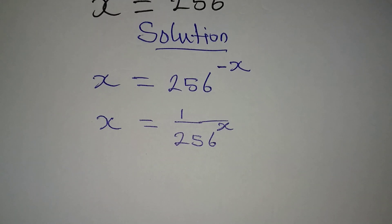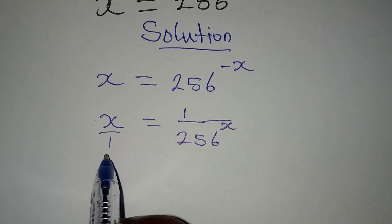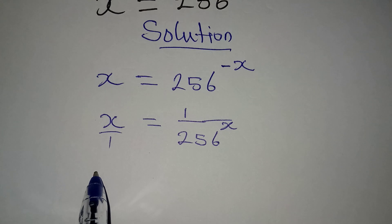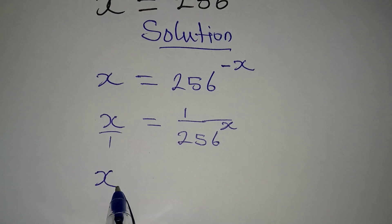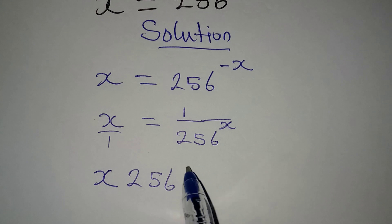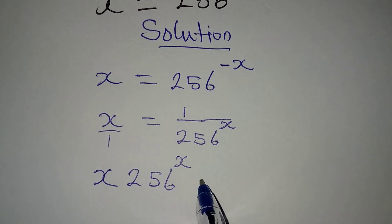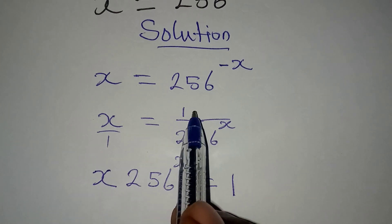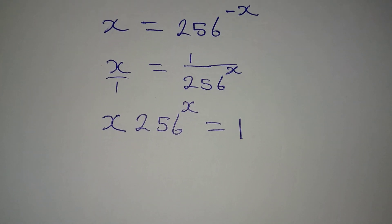From here we can cross-multiply since this is over 1. Multiplying x by 256 to the power of x gives us x times 256^x = 1, because we have 1 times 1 on the other side.